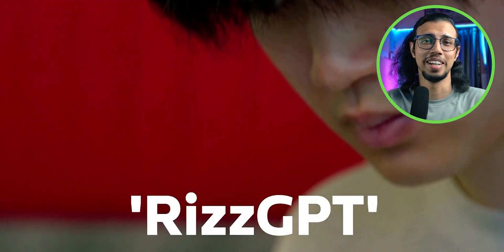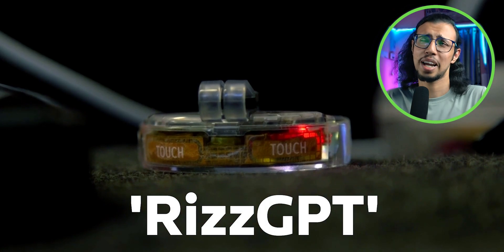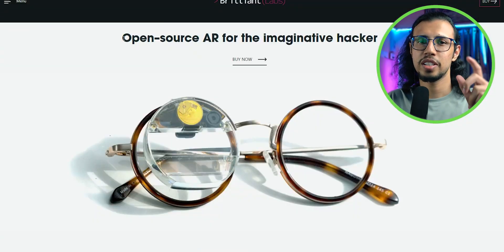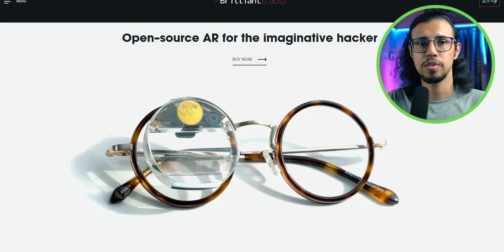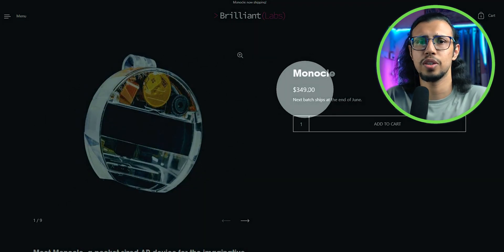He literally calls it RizzGPT. It's such a stupid but accurate name at the same time. He modified this open source monocle that's developed by Brilliant Labs. You can actually buy it and modify it yourself.